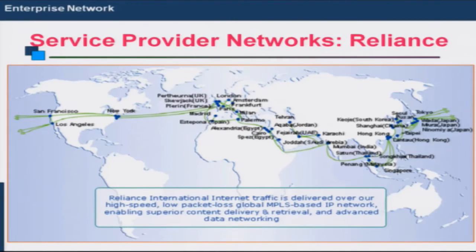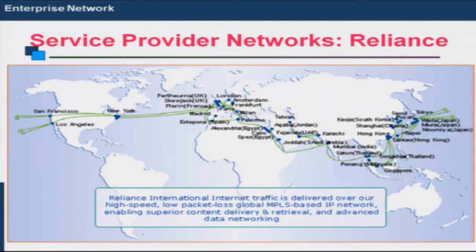Similarly, this diagram shows the network of a very prominent international ISP — TeleGlobe. The green lines in this diagram are the fiber optic cables laid across continents, most of which is submarine cable laid under the sea. They have a very large network spanning multiple countries and continents — for example, Southeast Asia, Europe, the Middle East, and North America. These international ISPs have points of presence in different countries at which they connect to the national ISPs of those countries.